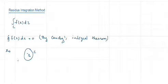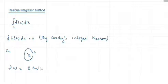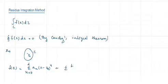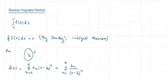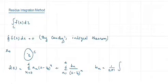Now, we know that if z₀ is a singularity, we can write the Laurent series of f as: summation of aₙ(z − z₀)ⁿ where n varies from 0 to infinity, plus summation of bₙ/(z − z₀)ⁿ where n varies from 1 to infinity. And we already saw that the formula for bₙ is given by (1/2πi) times the integral of (z − z₀)^(n−1) f(z) dz.